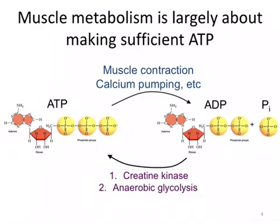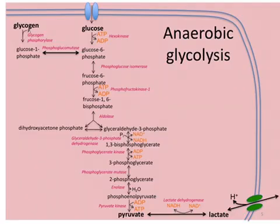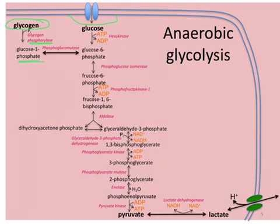The second most rapid process is anaerobic glycolysis. The glucose can either come in through a glucose transporter like GLUT1 or GLUT4, or come from the breakdown of glycogen. Remember that glycogen is broken down by glycogen phosphorylase, which adds a phosphate, giving glucose that is already phosphorylated, and the glucose-1-phosphate can be interconverted to glucose-6-phosphate.